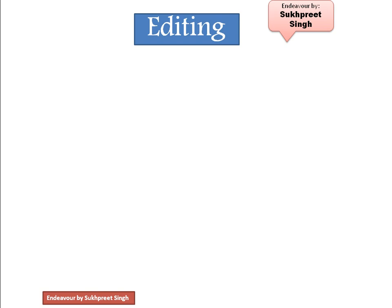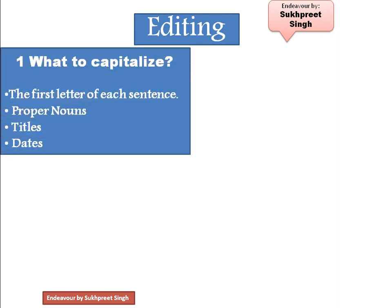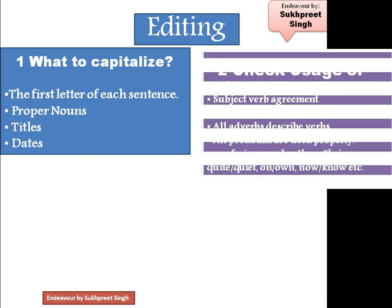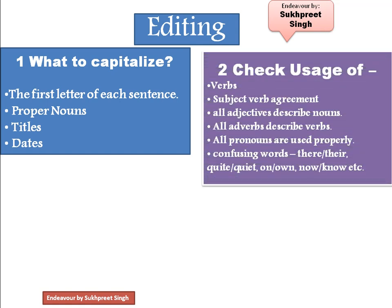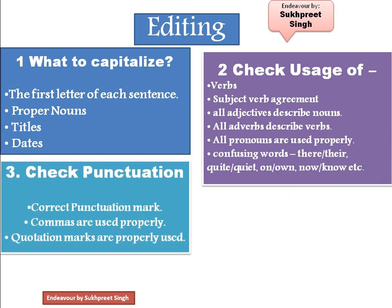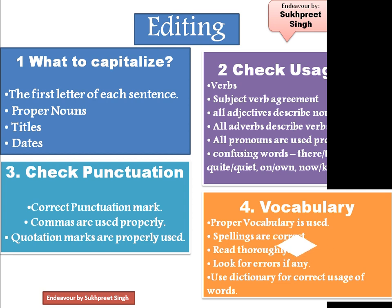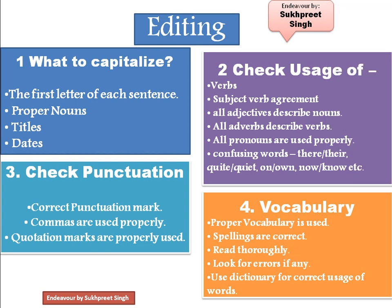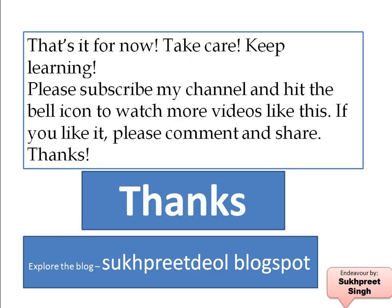After writing the article, it should be edited and checked on these parameters. Capitalization: the first letter of each sentence should be capital, proper nouns should be capital, and titles and dates. Check usage of verbs: subject-verb agreement, all adjectives describe nouns, all adverbs describe verbs, and all pronouns are used properly — especially confusing words like 'there/their,' 'quite/quiet,' 'on/own,' 'now/no.' Check punctuation: correct punctuation marks, commas used properly, quotation marks properly used. Vocabulary should be proper, spellings correct — read thoroughly, look for errors, and use a dictionary.